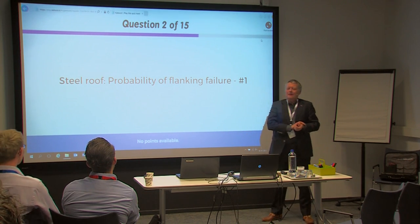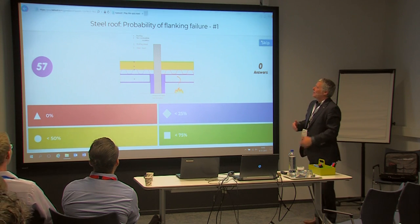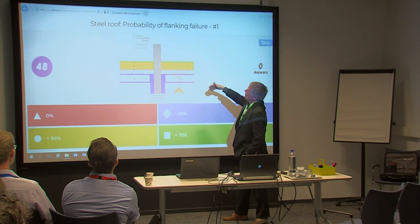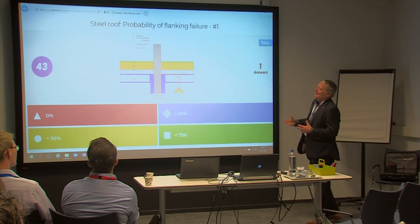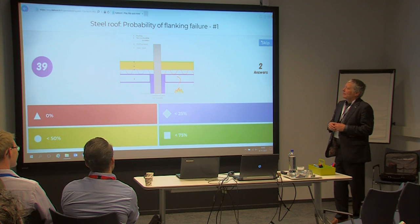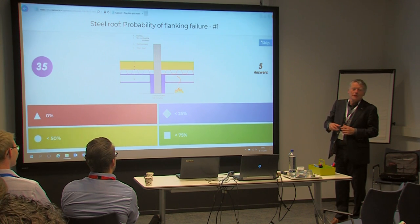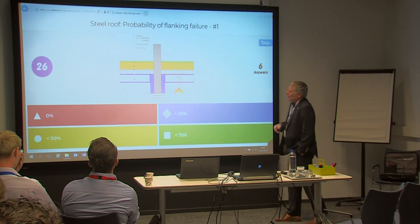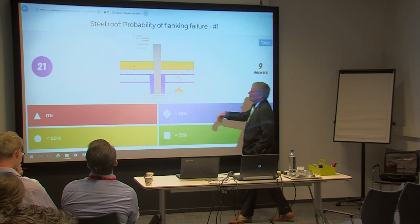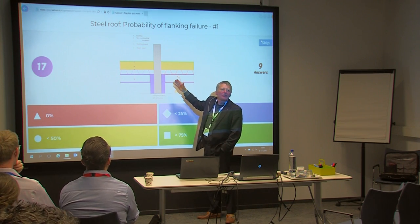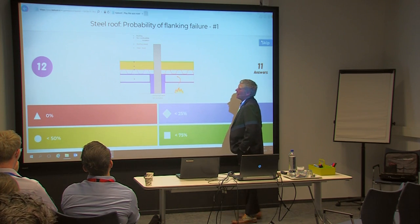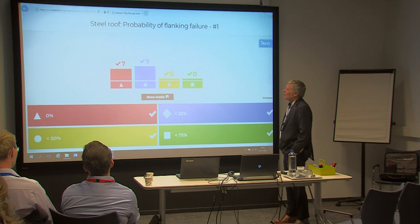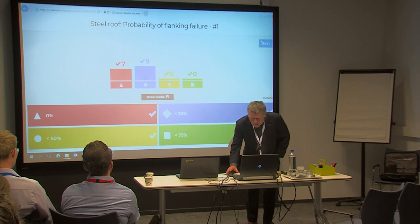First detail — a steel roof: what is the probability of flanking failure? It's only about flanking, not the direct path. This detail has a non-combustible insulation roofing with the compartment wall acting as a barrier. Failure probability means the probability of not meeting the criteria for a fire-safe construction — too much energy flowing through via the flanking path. The options are: zero, 0–25%, 25–50%, or 50–75%.